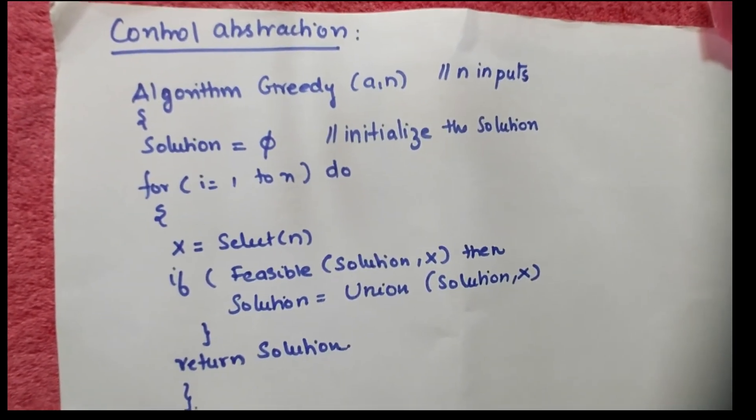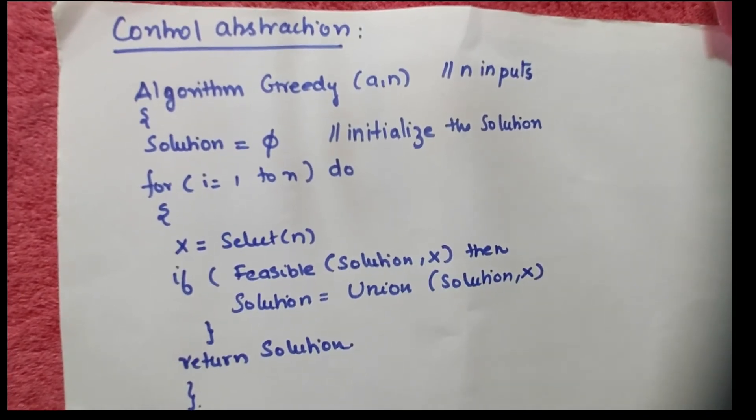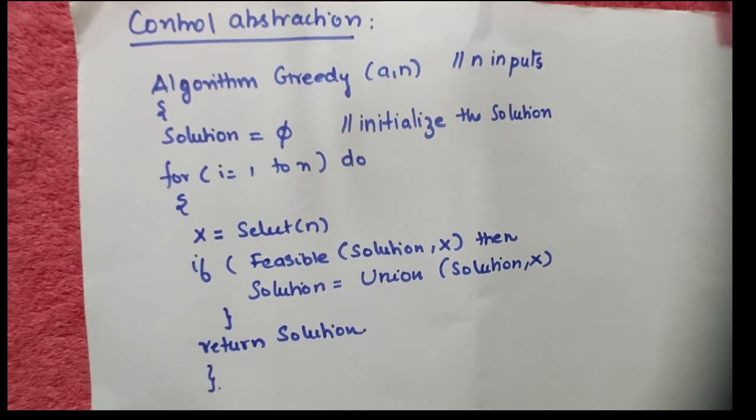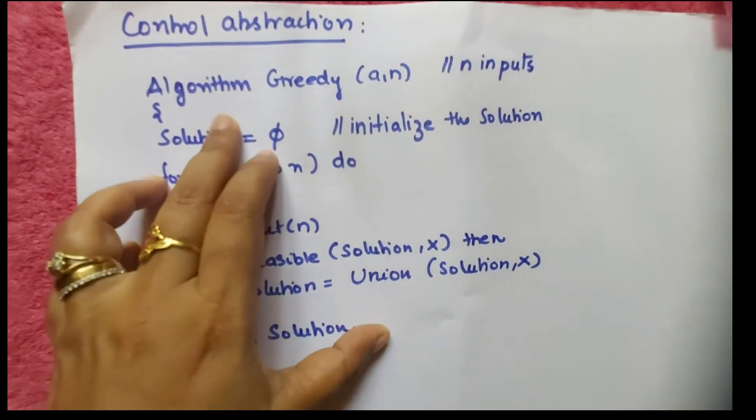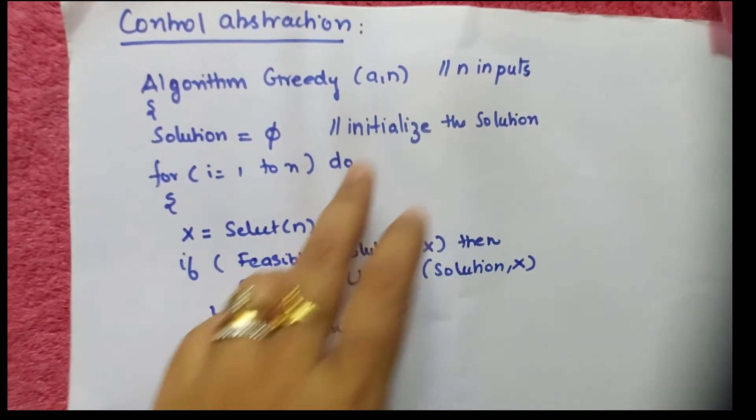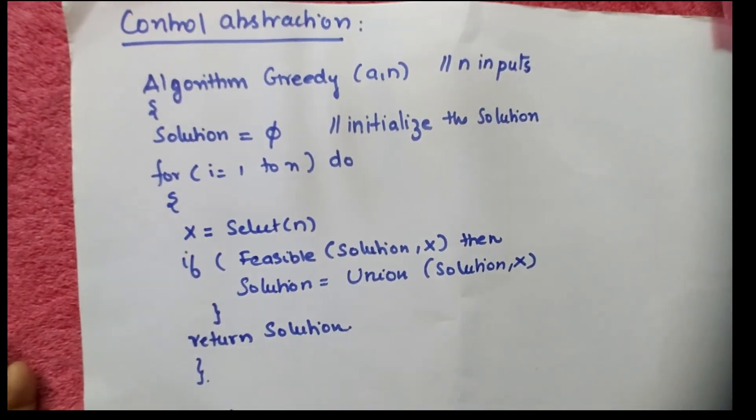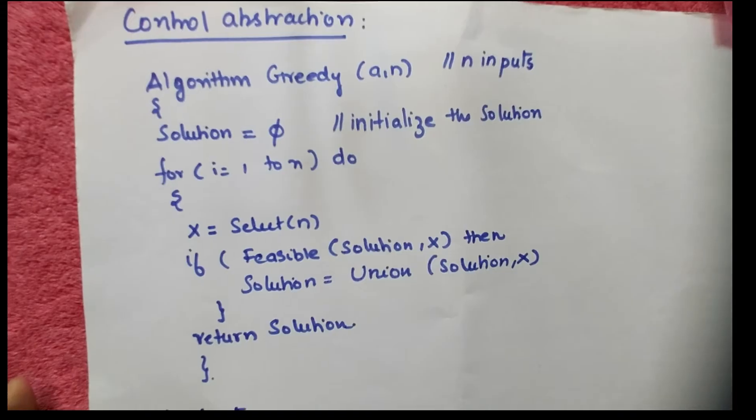Let us study the control abstraction of this greedy method. The algorithm of the greedy method will have an array in it - algorithm greedy (a, n) with n inputs. We had many inputs from going Kerala to Delhi.